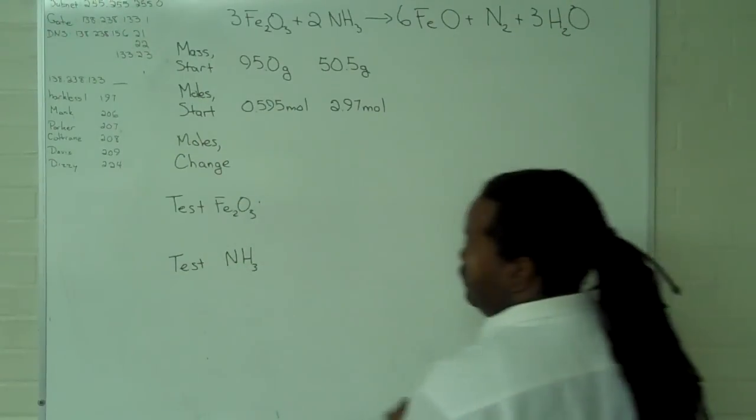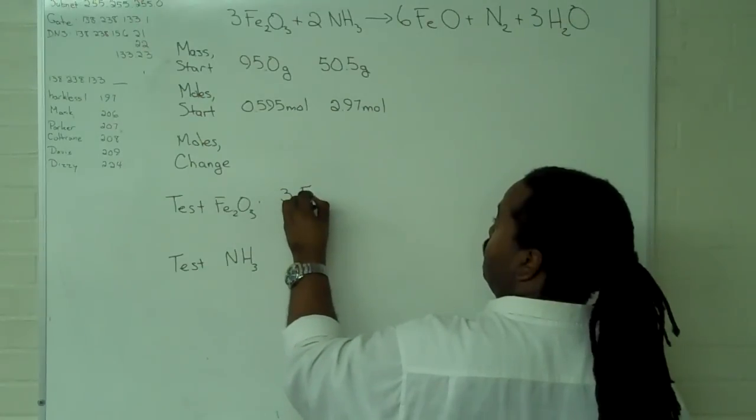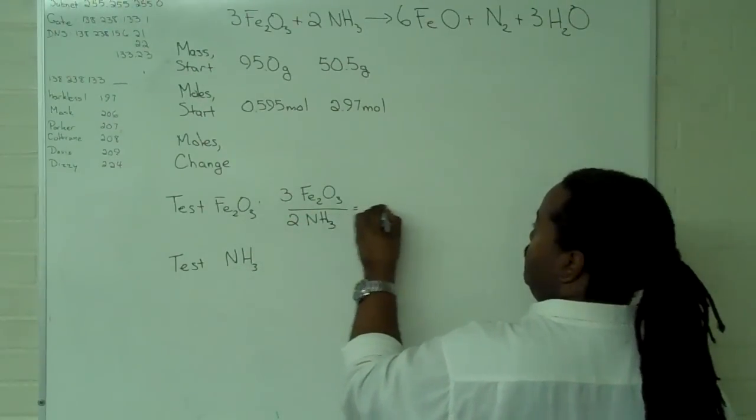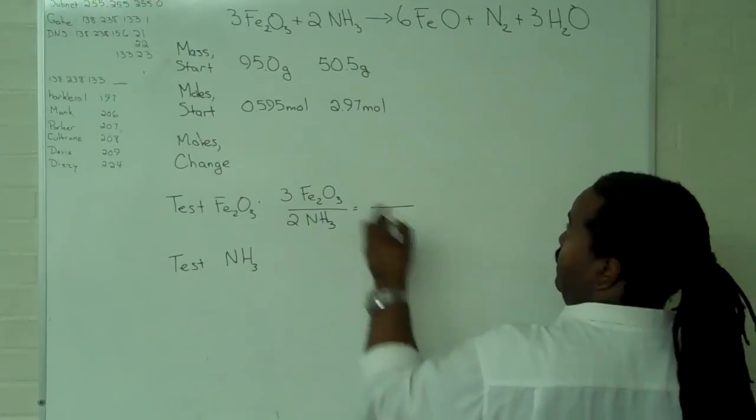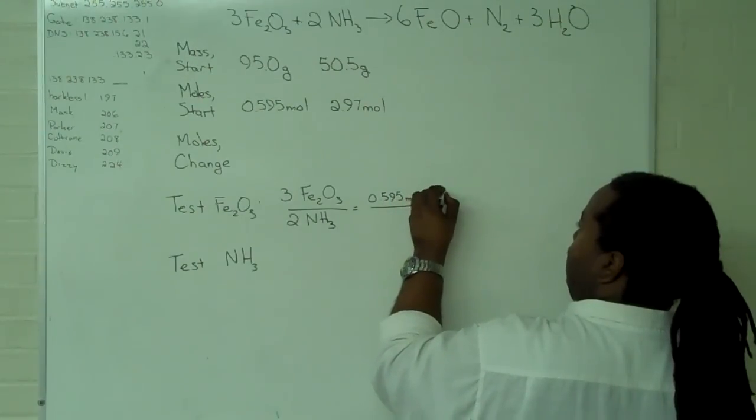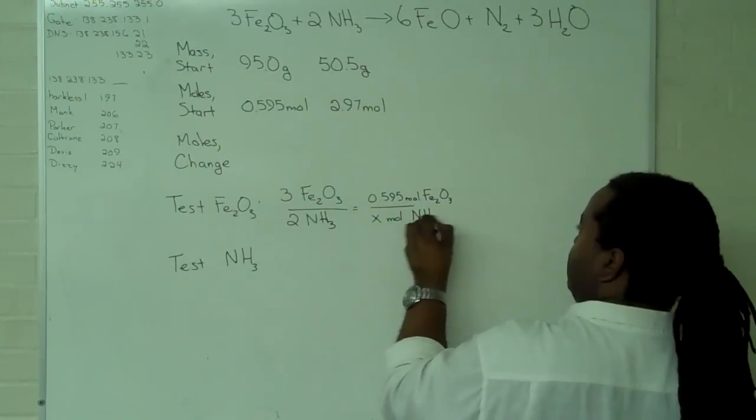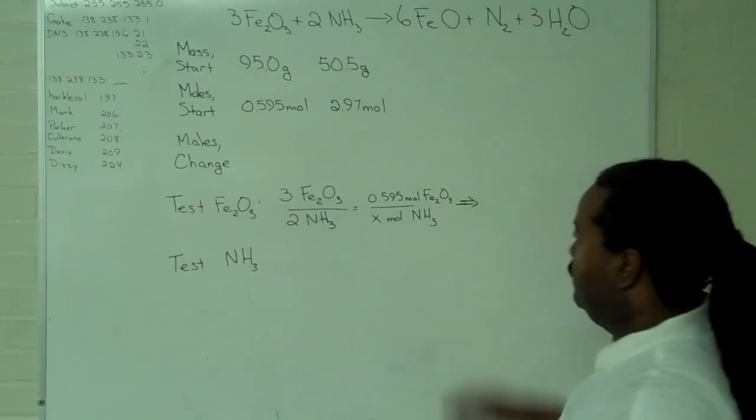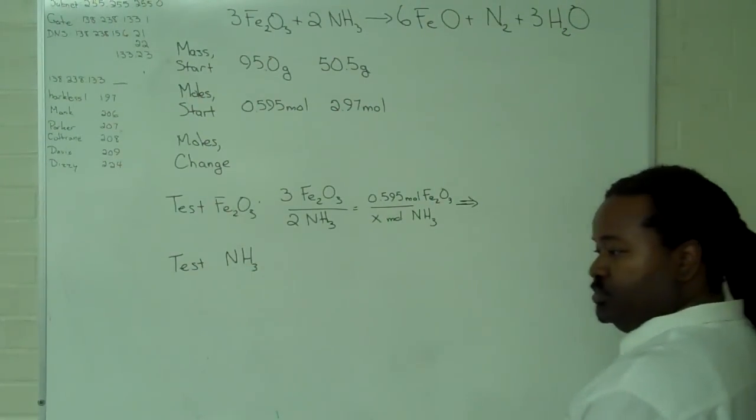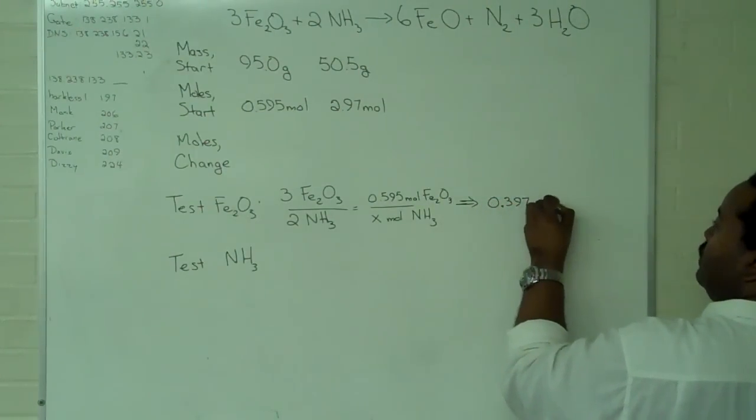Our first test is for the iron-3 oxide. We use the mole ratio from the balanced reaction and compare that against the number of moles that we've been given for the iron-3 oxide. The outcome of this test will tell us how many moles of ammonia are necessary to completely use up the iron-3 oxide. We can cross-multiply and solve for x, which gives us a value of 0.397 moles of ammonia.